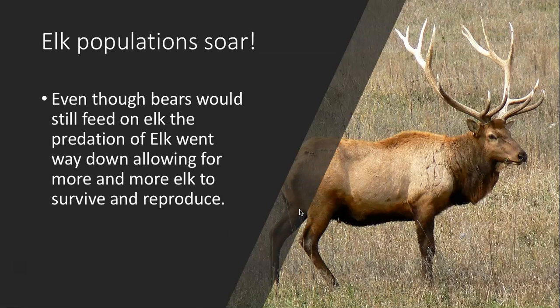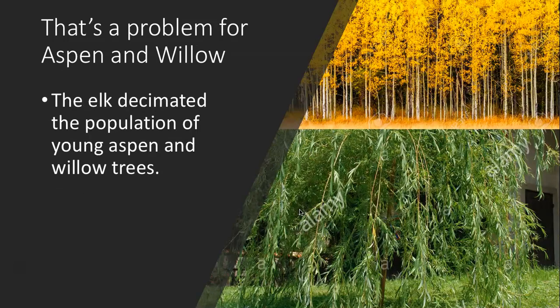That caused some unintended results. Elk populations started to soar. Even though bears would still feed on elk, the predation overall went way down, allowing more and more elk to survive and reproduce. And when more elk survive and reproduce, the populations of the organisms they use for food are affected — that's a big problem for aspen and willow trees. The elk decimated young aspen and willow trees to the point where only adult individuals remained, and when they died, they were not being replaced. There was almost no aspen and willow left in the park.